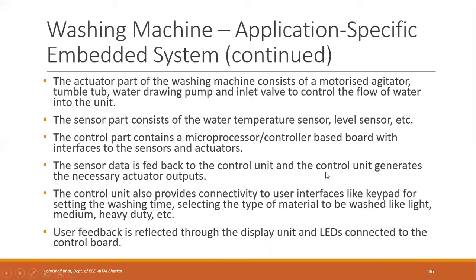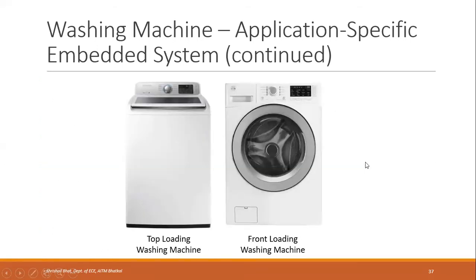The sensor data is fed back to the control unit, which generates the necessary actuator outputs. The control unit also provides connectivity to user interfaces like a keypad for setting wash time and selecting the type of material — light, medium, or heavy duty — and the type of operation: wash, rinse, or soak. User feedback is reflected through the display unit and LEDs on the control board.